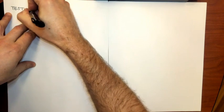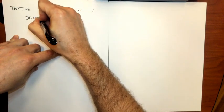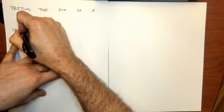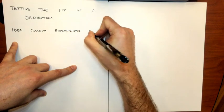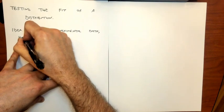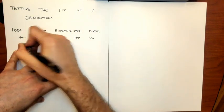Two topics for today. The first topic is what I would call testing the fit of a distribution. This is slightly related to what we talked about in the previous couple of lectures on hypothesis testing. The setup is that we are collecting some experimental data and we want to determine how well this experimental data fits an underlying model of a PDF. We collect experimental data coming from a random process and we want to know how good is the fit to a proposed distribution.